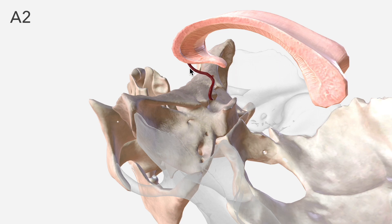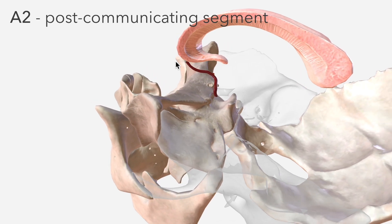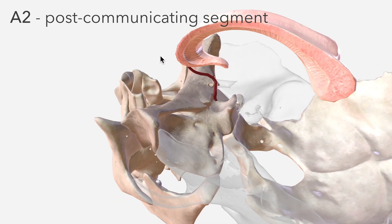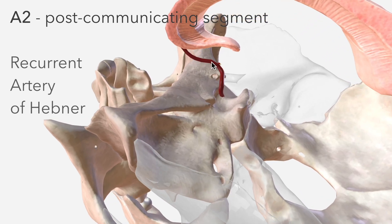A2, on the other hand, is the post-communicating segment, which continues until the genu — this curve here in the corpus callosum. So from the anterior communicating artery until the genu is A2, from which departs the recurrent artery of Heubner, an artery not included in this model, but which departs in the proximal A2 segment to run parallel to A1 to supply some important structures of the basal ganglia.